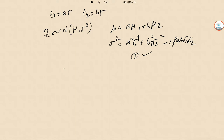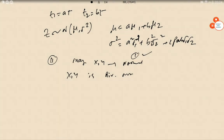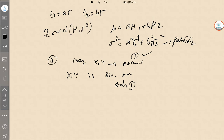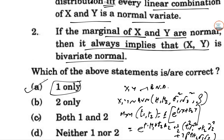And for the second one, if marginal functions of X and Y are normal, then it implies that X and Y is bivariate normal. But not necessarily this one is true. So only one is correct. So that makes the answer to be option number A or one only.